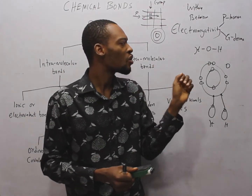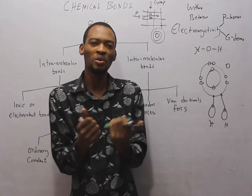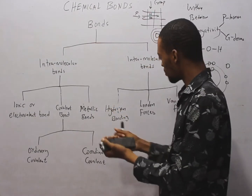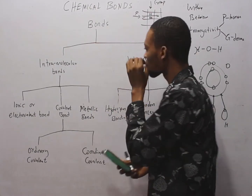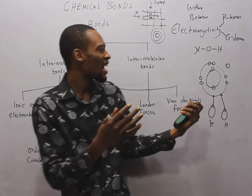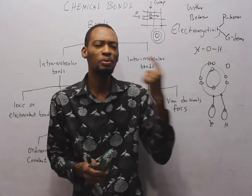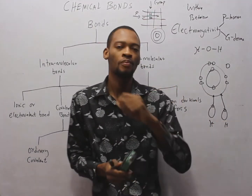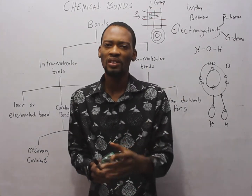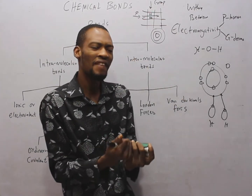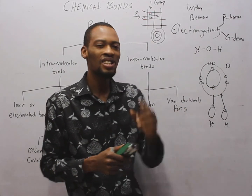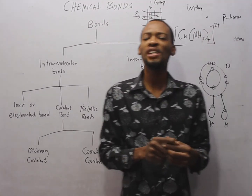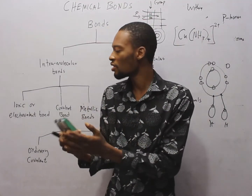Anytime hydrogen combines with a more electronegative element in covalent bonding, hydrogen bonds exist. Hydrogen bonds are intermolecular forces that appear whenever hydrogen is covalently bonded to a very electronegative element. Water and ethanol have covalent bonds but still have high boiling points — this is due to the hydrogen bonding present.